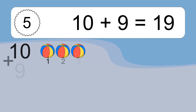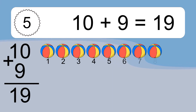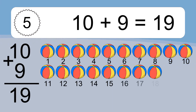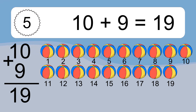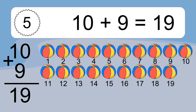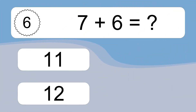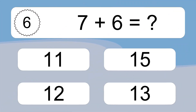10 plus 9 equals 19. Let's count it. 1, 2, 3, 4, 5, 6, 7, 8, 9, 10, 11, 12, 13, 14, 15, 16, 17, 18, 19. 7 plus 6 equals what?